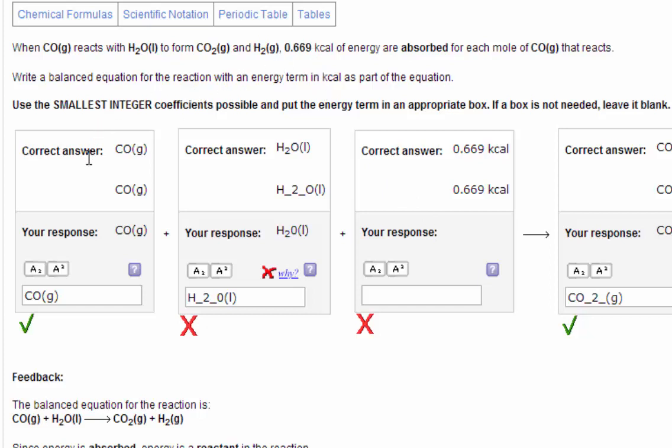So in the balanced equation, there is only one mole of CO. So if there's one mole of CO in the balanced equation, the amount of heat absorbed therefore is 0.669.